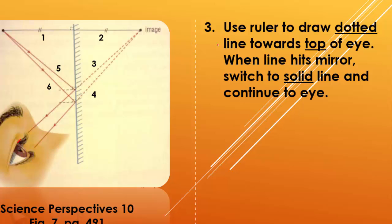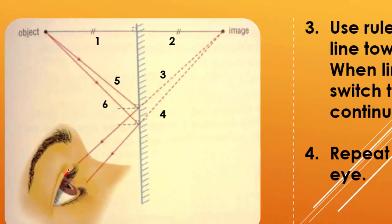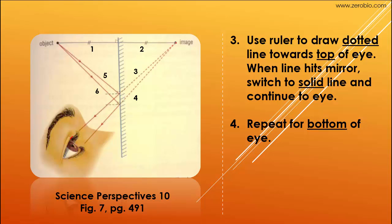Use your ruler to draw a dotted line. So you see these are dotted already, so go ahead and do that towards the top of the eye. So you've got your ruler down, and you start drawing a line towards the top of the eye, but once you hit the mirror, continue that line, but switch to a solid line, and you go towards the top of the eye. You're going to do the same thing from the image, like right from the center of the image, towards the bottom of the eye. So you lay your ruler down, you do a dotted line, it's going to hit the mirror, and then when it does, switch it to a solid line to go towards the bottom of the eye.